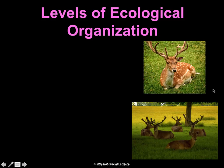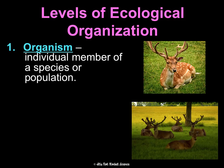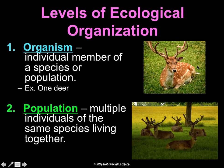In order to understand all this life, we organize it in an ecological way. The simplest organization is just one organism — an individual member of a species or population, like one deer. A population is multiple individuals of the same species living together in the same place, so maybe all of the deer in a specific field.